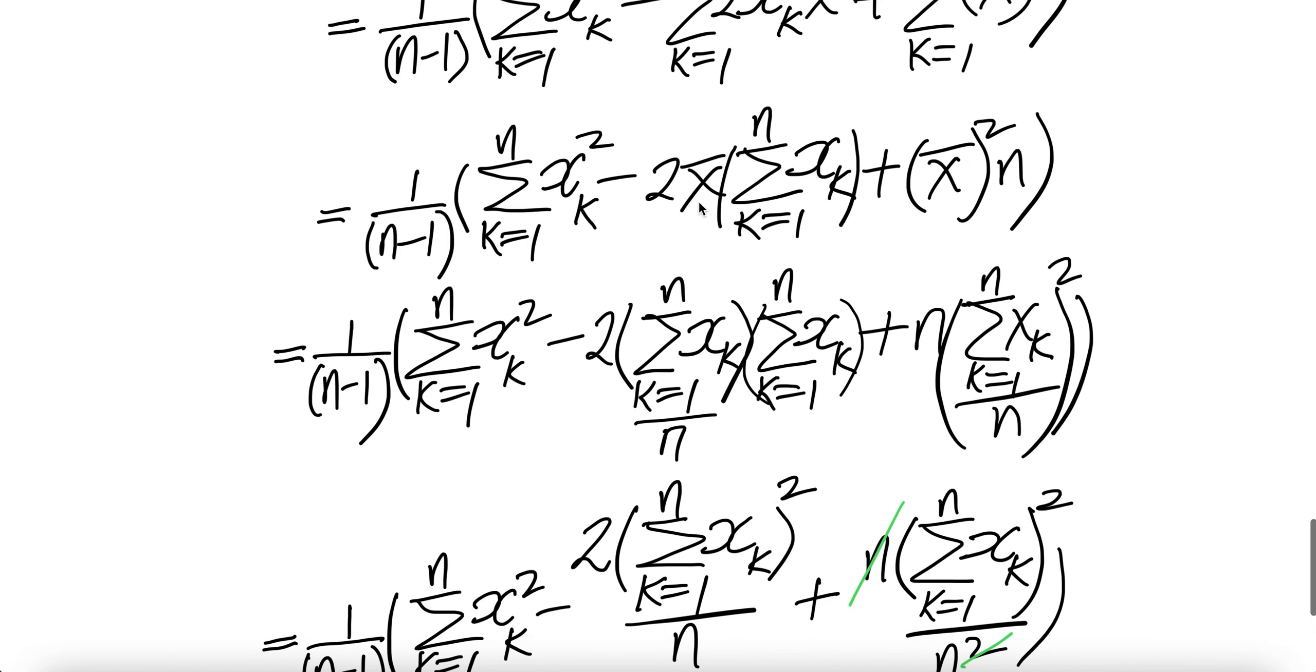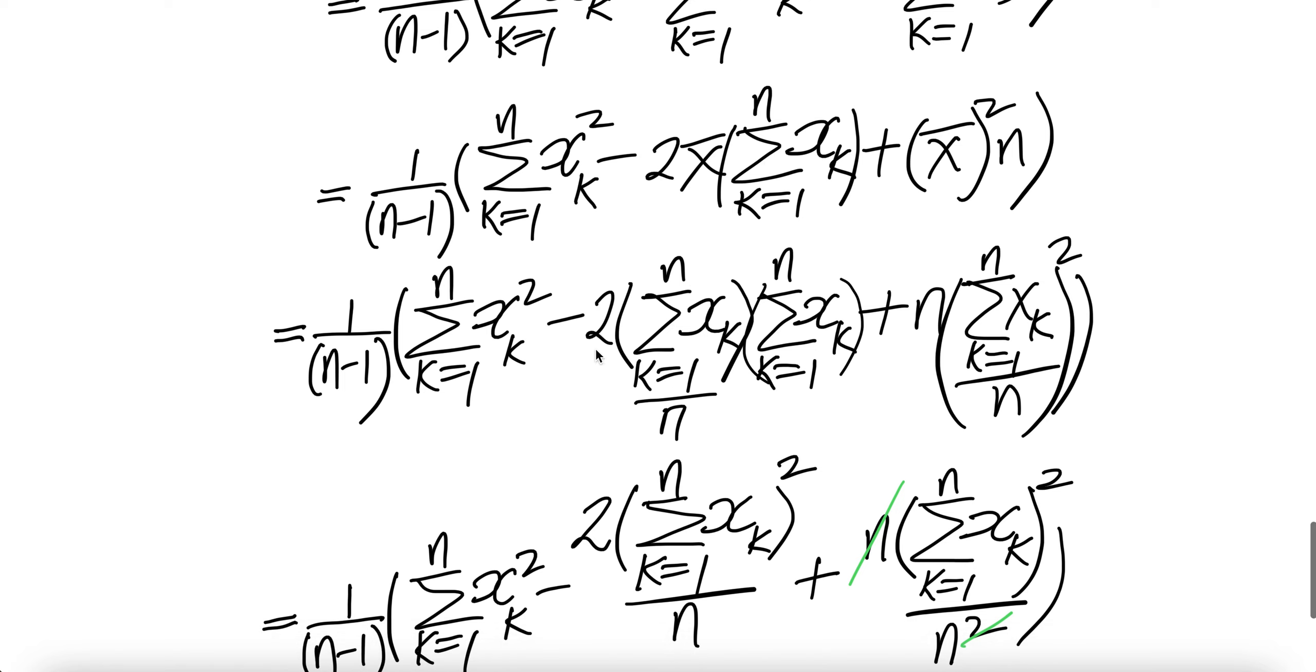Now, let us write this as summation xk, k equal 1 to n, divided by n. This will be bar x. Right? And then write this as summation xk, k equal 1 to n, divided by n. This will give you bar x.